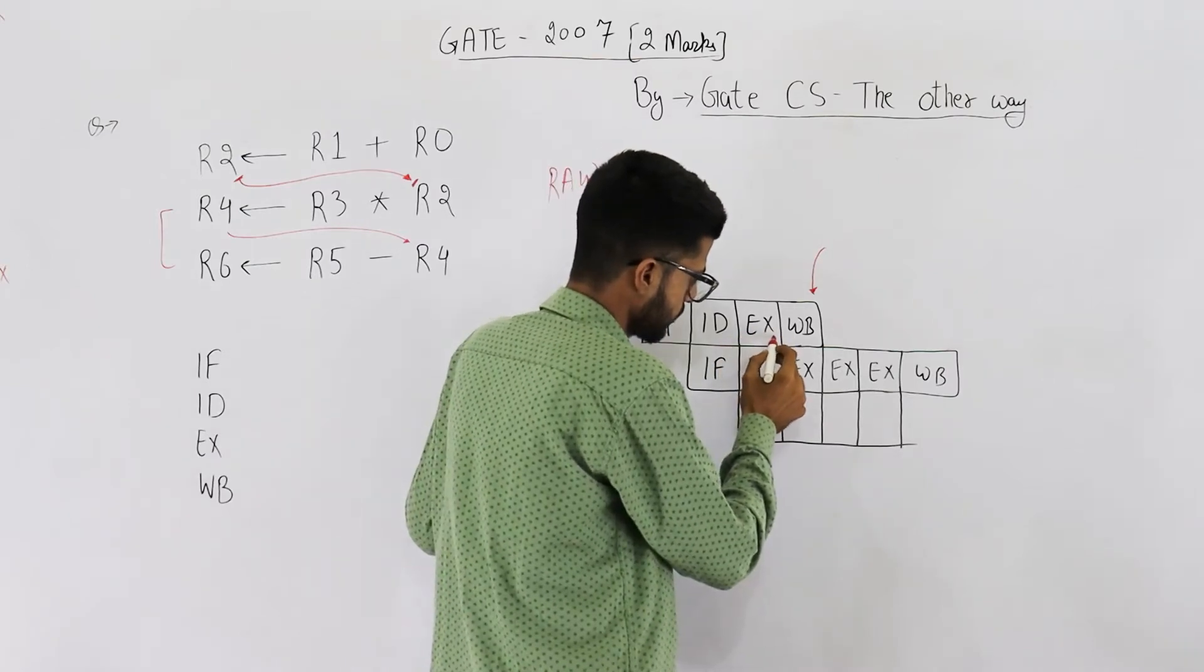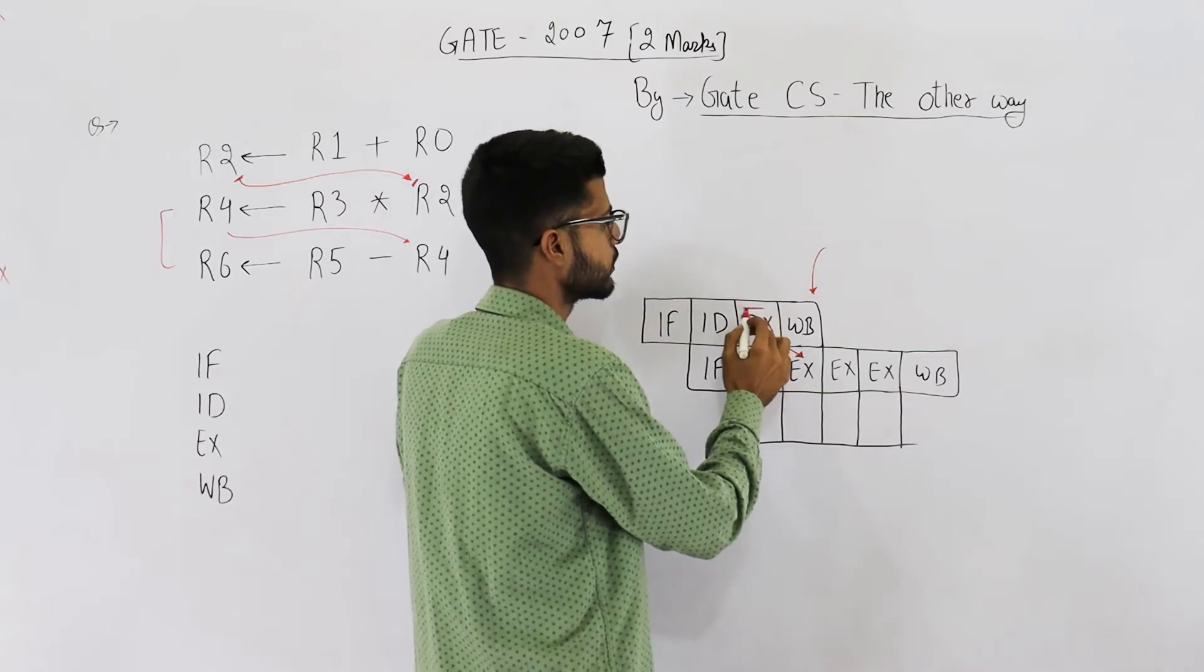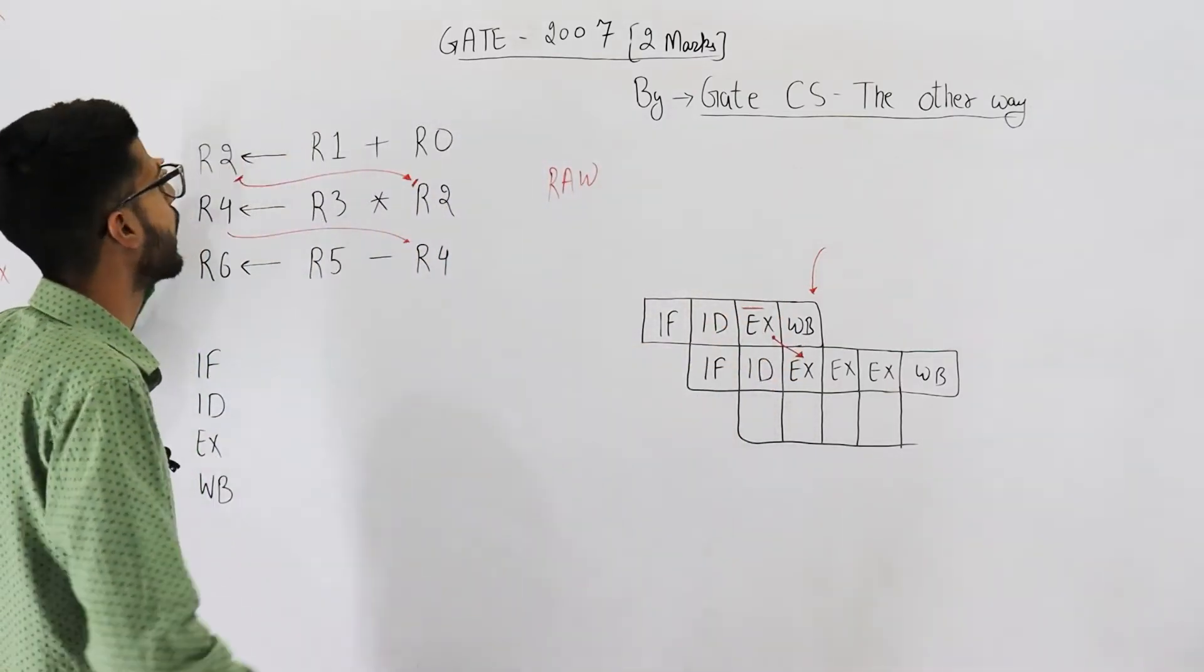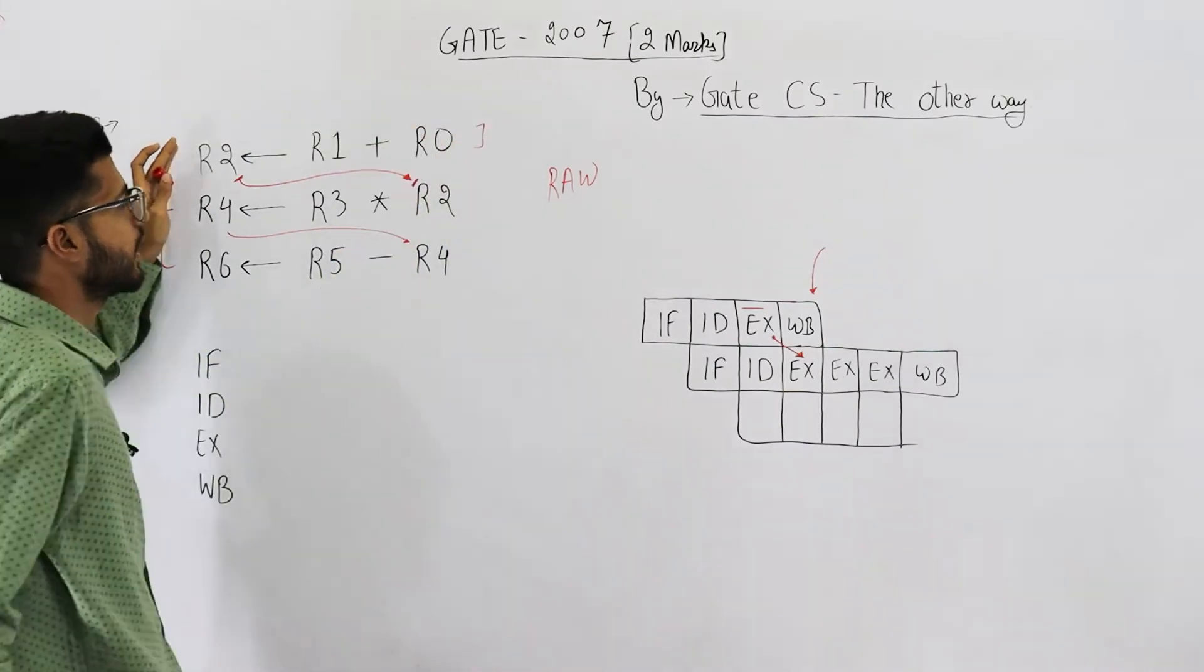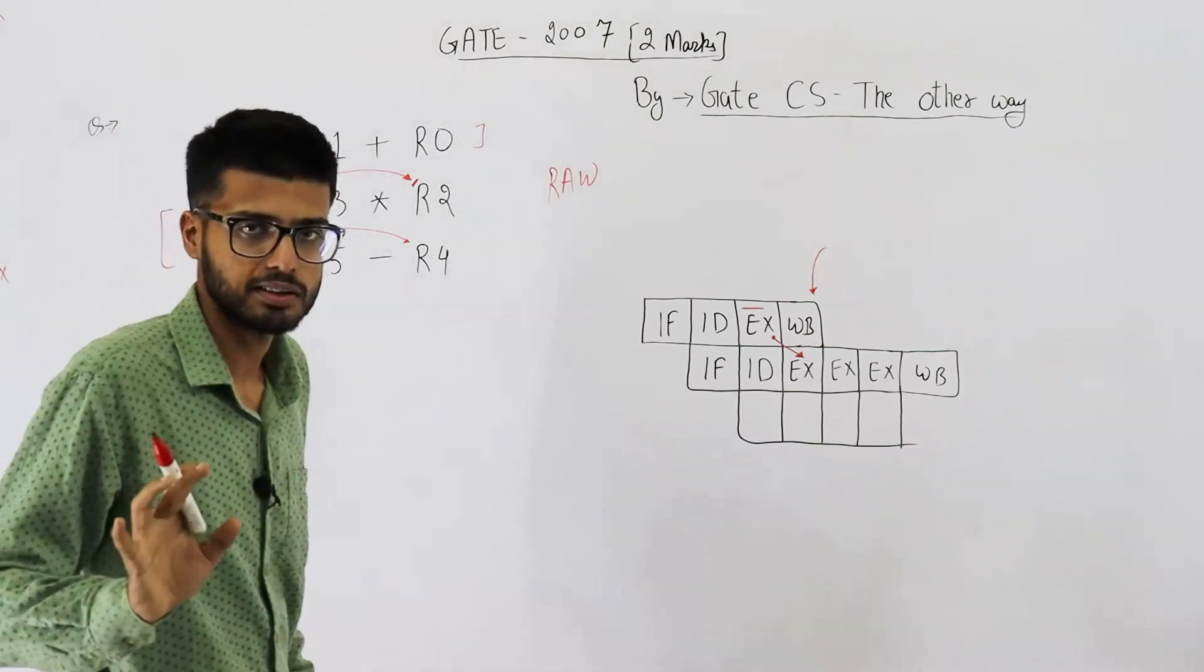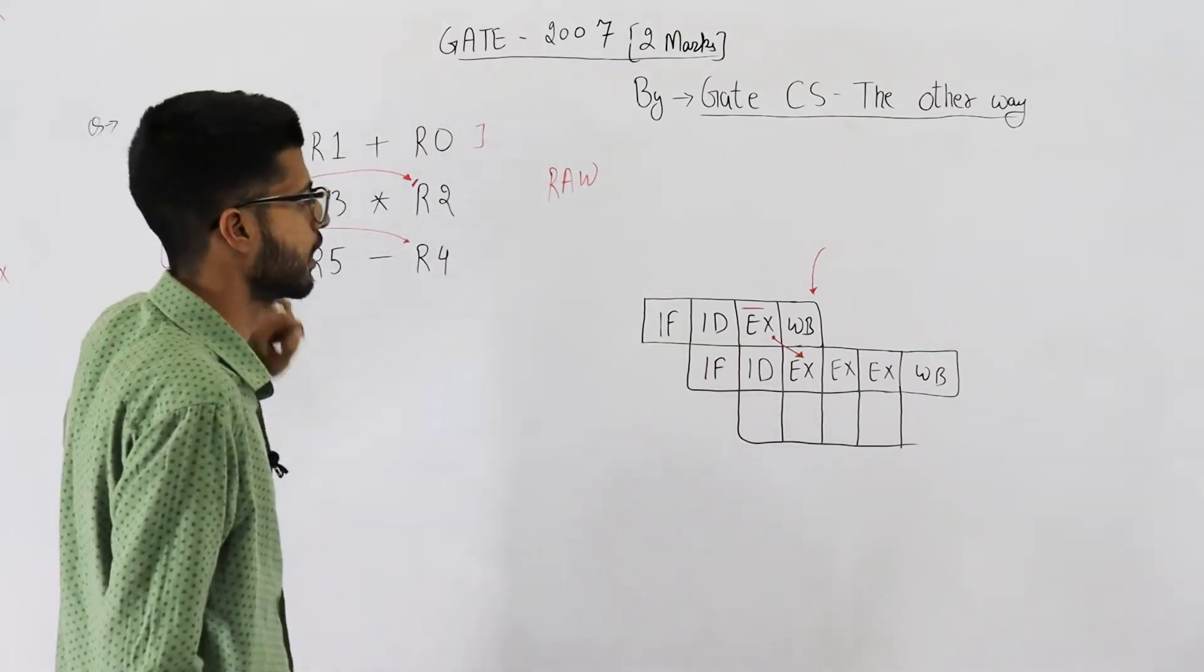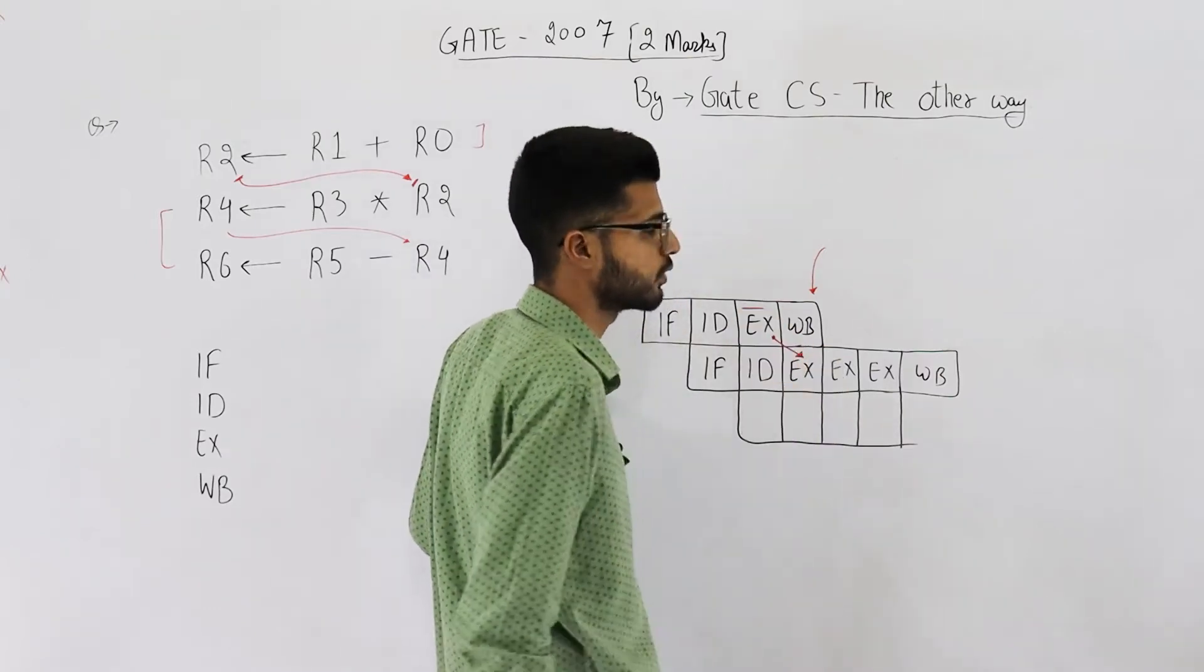Now let's see how is operand being forwarded. This is the stage where the operand is ready. This execute stage, in this stage the operand is ready. I1, instruction one, has calculated the operand, that means R1 plus R0, this arithmetic operation is performed in execute stage.